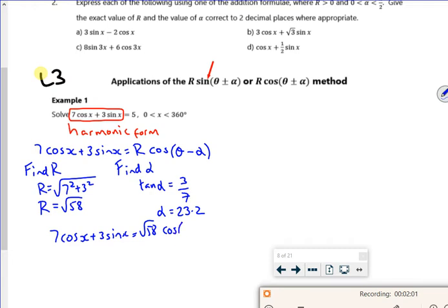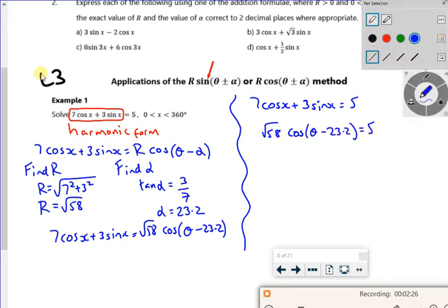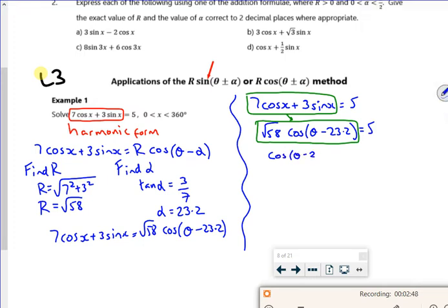And then that gives me alpha as 23.2. So my 7 cos x plus 3 sin x is really root 58 cos of theta minus 23.2. So what that means is this original function that I wanted to solve, that becomes root 58 cos of theta minus 23.2 is equal to 5. So this bit here has been transformed into this in harmonic form. Right now then, if I want to solve it, this is just like any of the solving stuff I've done in the past. If I divide through by the root 58.